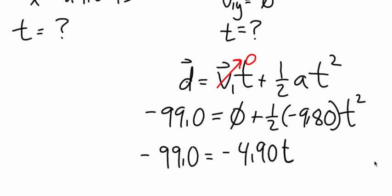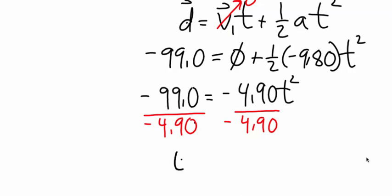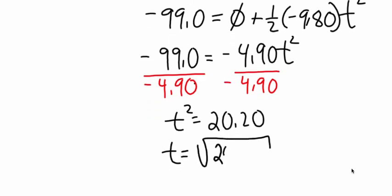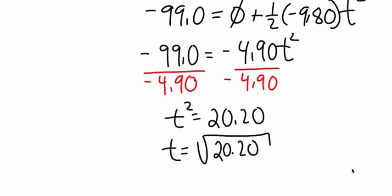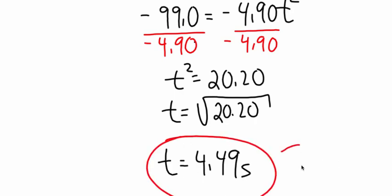So we'll do a little bit of math. We want to solve for t squared, so let's divide both sides by negative 4.90. t squared is 20.20, take the square root of both sides. 4.49 seconds, which means the time of flight is 4.49 seconds. That's how long the ball will be in the air.